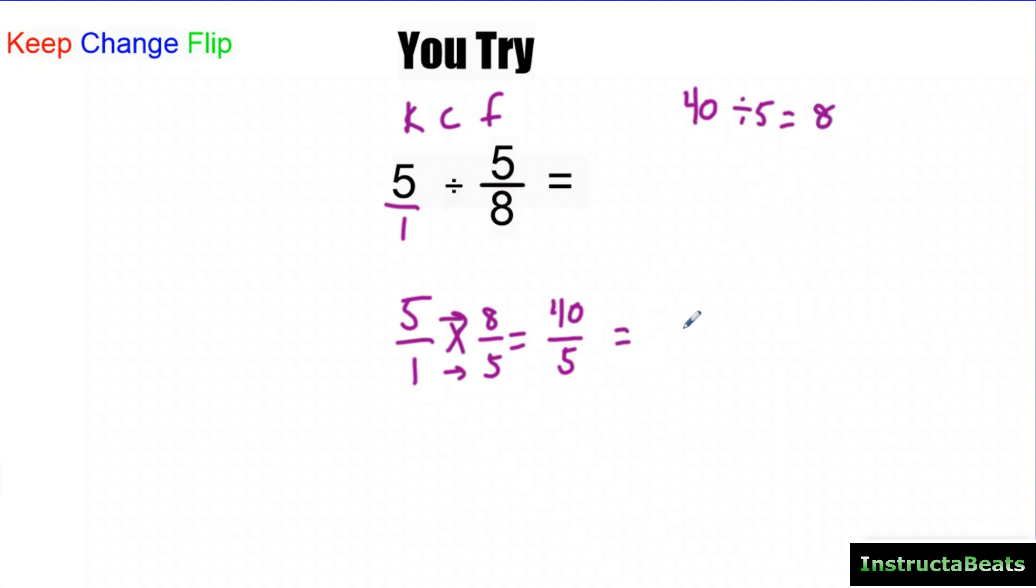And that obviously would equal eight. So 40 fifths, when it's an improper fraction, turn it into a whole number, your answer will be eight. So if I had five wholes and I'm dividing them into groups of five eighths, I could make eight groups.